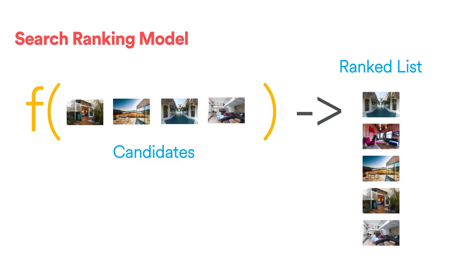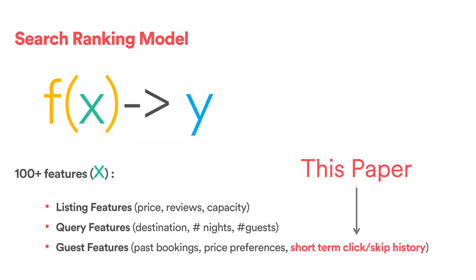That is why we use a sophisticated search ranking model that takes in all the candidates and outputs a ranked list of listings, deciding which ones show up on the first page, on the second page, and so on. The search ranking model uses more than 100 different signals, including listing and guest features.